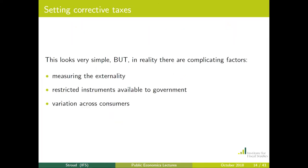In practice, applying corrective taxation involves quite a number of difficulties — the sort of thing that people at the IFS do lots of research on. These difficulties include: first, measuring the externality — that is, the vertical distance between the private marginal cost and the social marginal cost, which isn't always clear. Second, restrictions on what instruments are available to a government. And third, variation in the size of the externality across individuals.